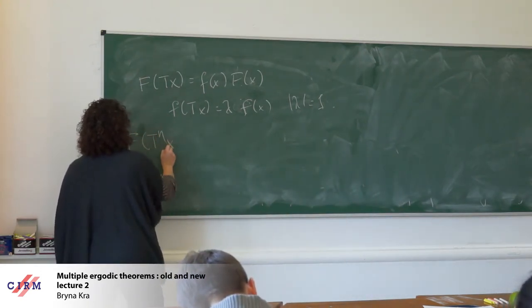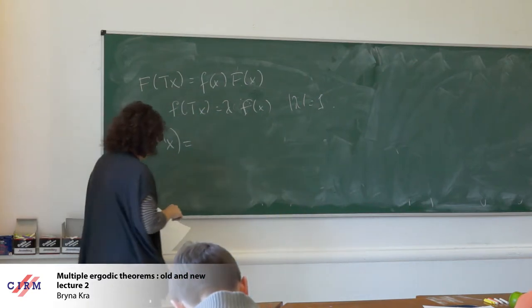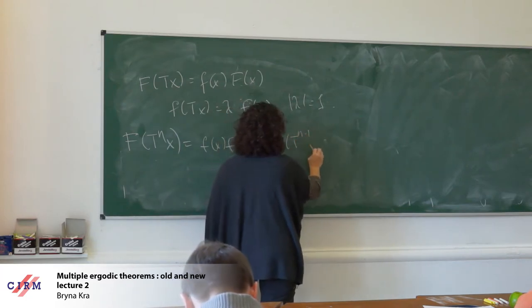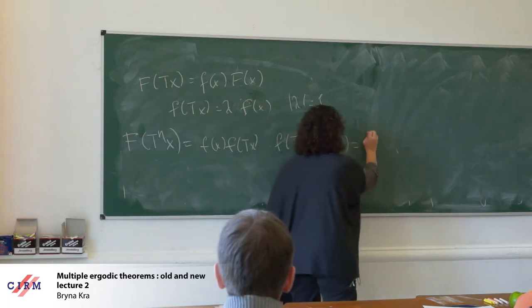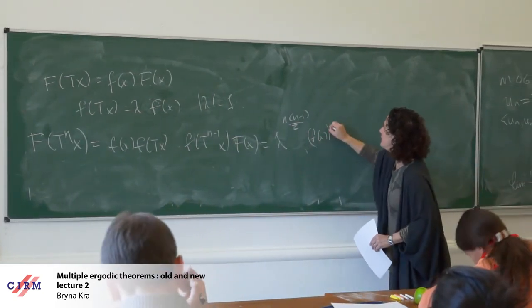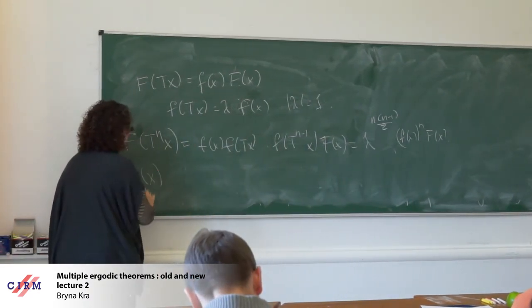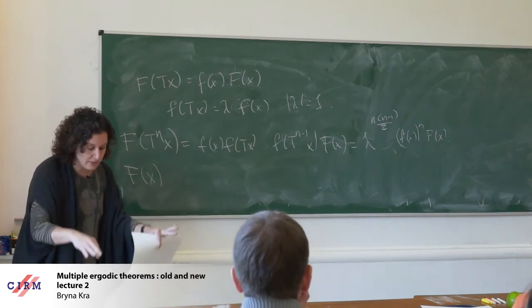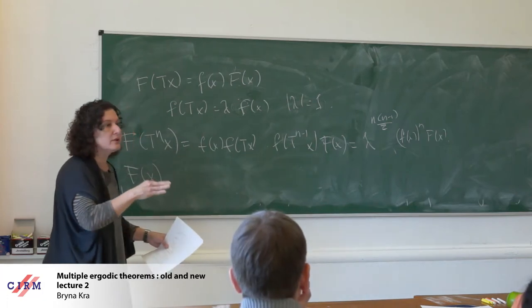If you want to, you can write out and iterate this, and compute what F(T^n x) is. This will be F(x) times F(Tx) times ... times F(T^{n-1} x), giving a quadratic term: f(x) to the n times F(x). So if I look at F(x), it gives me a relation involving quadruples: x, T^n x, T^{2n} x, T^{3n} x. This is a non-trivial relation involving four terms rather than the three terms we had with the triples in the Kronecker.